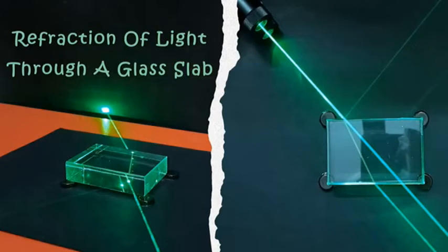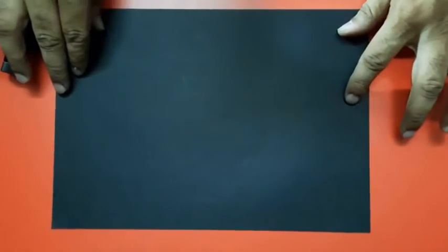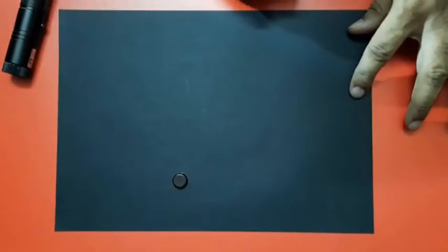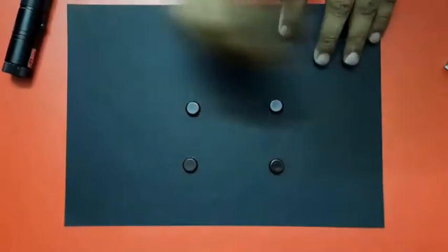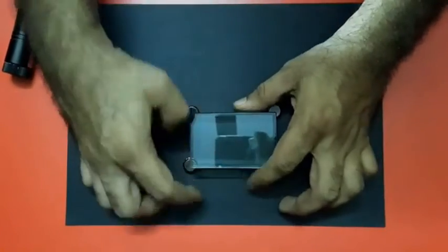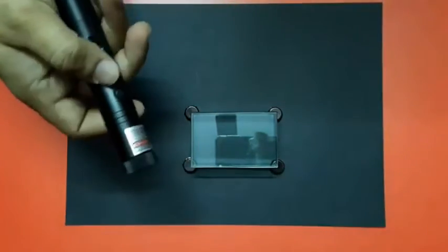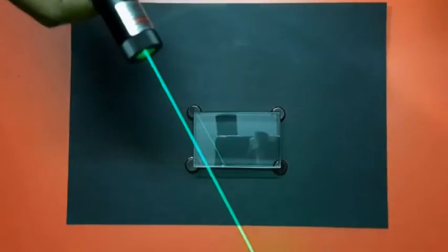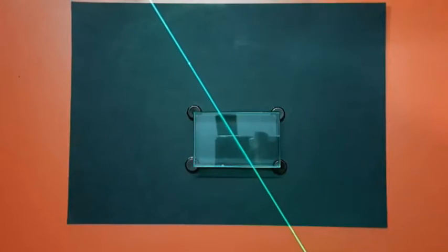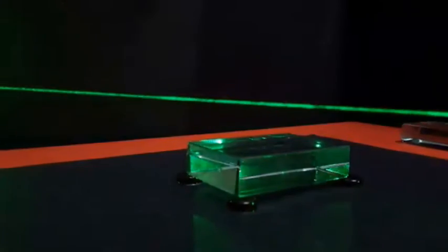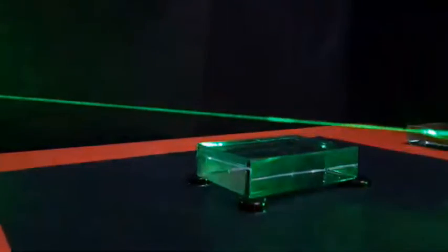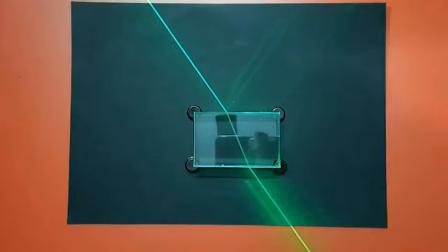My dear students, now we are going to learn refraction of light through a glass slab. For this activity, we will take a black paper as a background for the laser beam. We have placed four small tablets on the black paper, which serve as a platform for the glass slab — this gives better clarity for the laser beam. I am taking a powerful green laser torch. We can observe the laser beam travelling in a straight line in air medium, but when it passes through a glass slab, it bends. This bending of laser beam or visible light when it travels from one transparent medium to another is known as refraction of light.